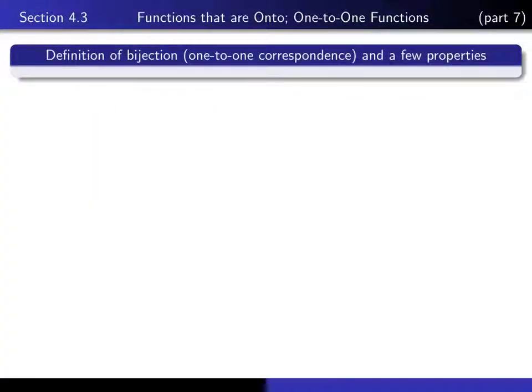This is Part 7 in our series of lectures on Section 4.3. In this lecture, we define what is meant by a bijection, and we give a few properties of it.